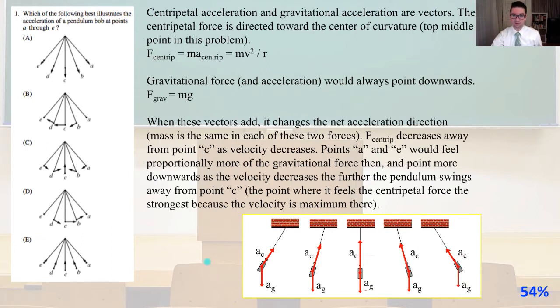The centripetal force is directed toward the center of curvature, which is the top middle point in this problem. We know that the centripetal force equals the mass times the acceleration, which equals mv² over r. The gravitational force and acceleration would always point downward, so F = mg. When these vectors add, it changes the net acceleration direction.